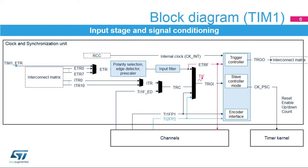Internal trigger in and out are connected to the interconnect matrix. A rising edge of the selected trigger input (TRGI) sets the TIF flag. When one timer is configured in master mode, it can reset, start, stop, or clock the counter of another timer configured in slave mode.